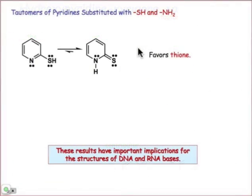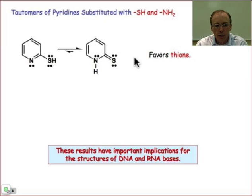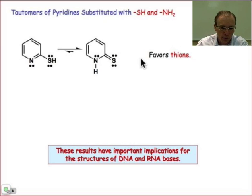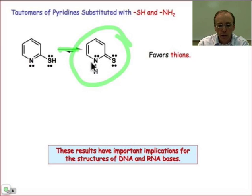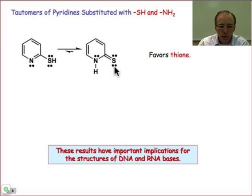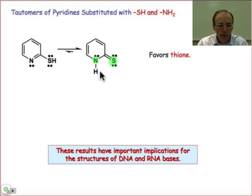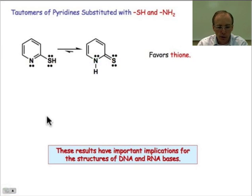Go ahead and give the resonance contributors of each of these tautomers some consideration. Draw them out — draw the second best resonance contributor out. You'll conclude in the case of the thione, the structure that's shown here, that this is the favored tautomeric form. You can see the equilibrium arrows lie to the right. And when we do consider the second best resonance contributor, we would again, in the case of thione, be putting the negative charge on sulfur and the positive charge on nitrogen. And this thiolpyridine has the charges reversed.